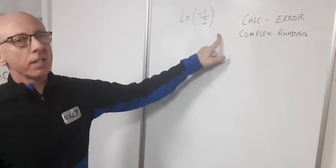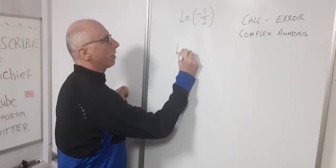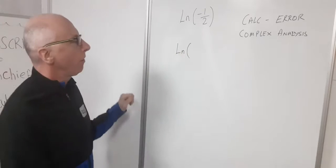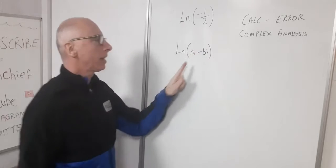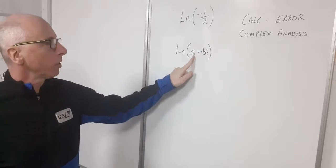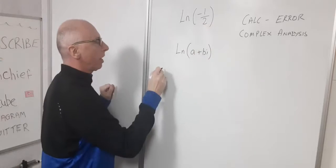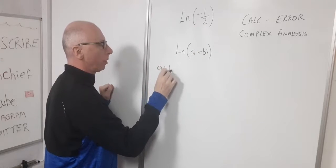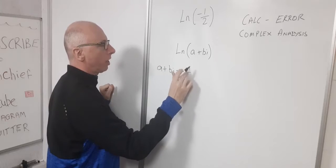Complex analysis breaks this down into a couple of parts. If we want to find the natural log of a plus bi, that is how most complex numbers are built. Our value is a plus bi, that in this case is minus one-half.